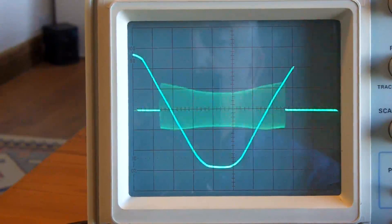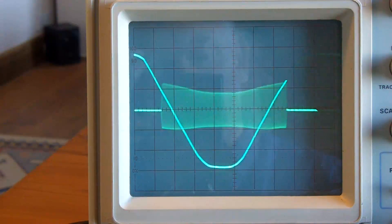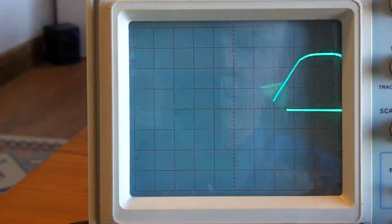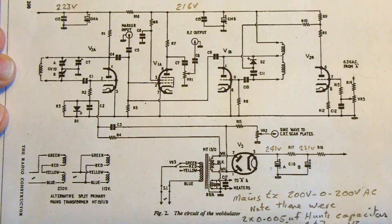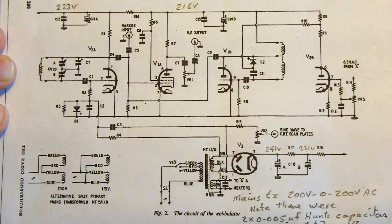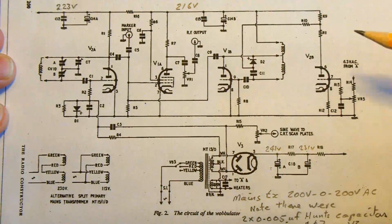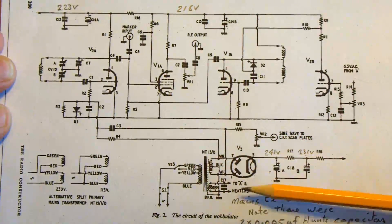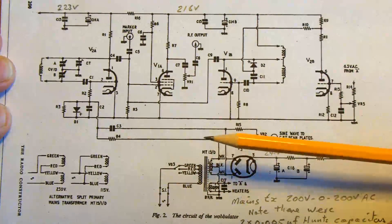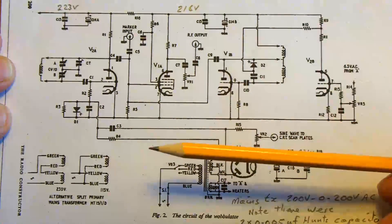So I want to get to understand the circuit diagram a little bit now and see what's happening. So this is the circuit diagram and I must admit, it's not immediately obvious what's going on. Clearly we've got the rectifier there.